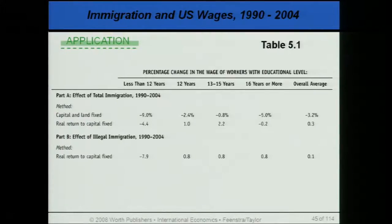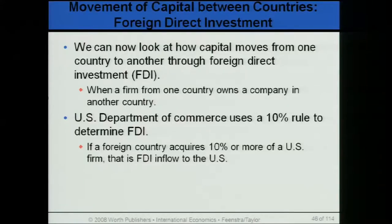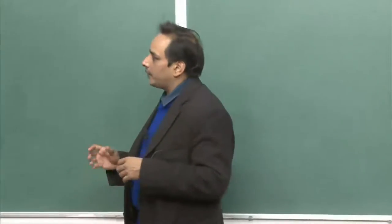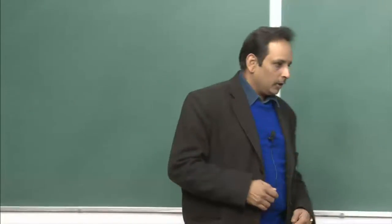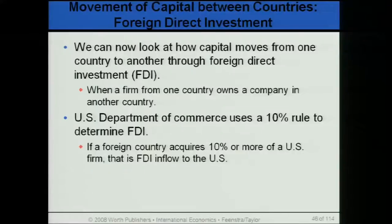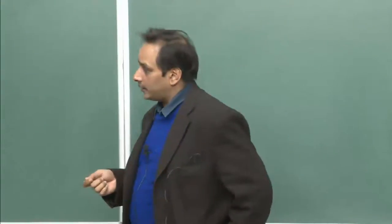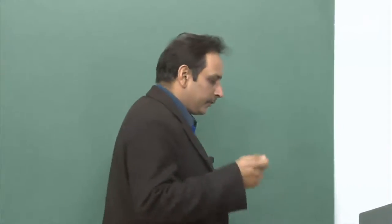Now I come to the movement of capital between countries, which is foreign direct investment. This is a very sensitive issue regarding FDI coming into developing countries, but our analysis will be the same as what we did when understanding the impact of labor immigration on the economy. The difference is that capital comes in from developed nations to developing nations. In the short run we resort to the Ricardo-Viner theorem, also called the specific factor model.